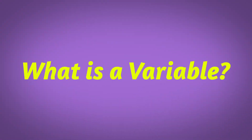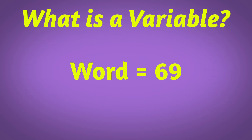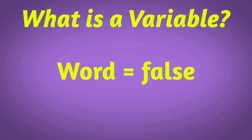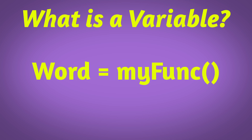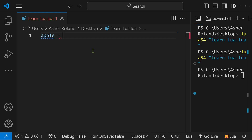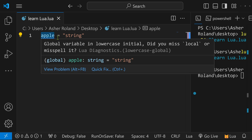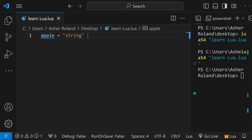We're going to start off with talking about variables. What is a variable? Very basic terminology — it is a word assigned to something. It can be assigned to a string, a number, or a boolean. It can also be assigned to what a function will return to you. So if you see a word like apple equals literally anything like a string, this right here is your variable.